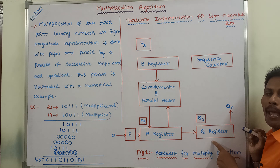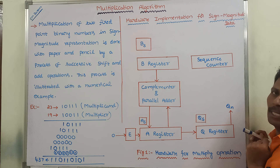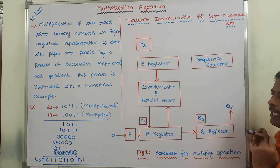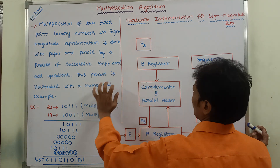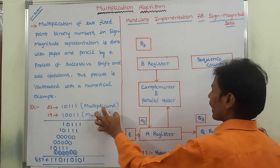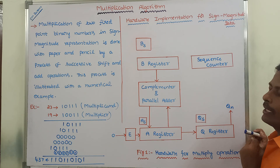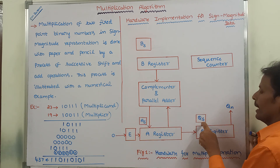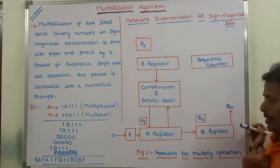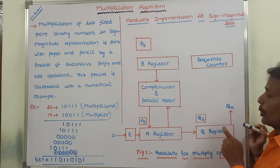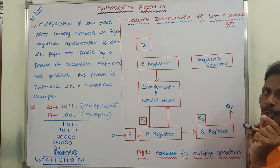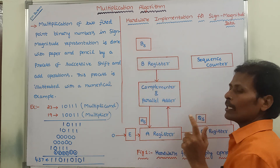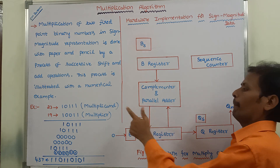The second register is called the Q register. This register is used for storing the multiplier. The sign bit of the multiplier is stored in a one-bit flip-flop called QS. So QS is used for storing the sign bit of the multiplier, and BS is used for storing the sign bit of the multiplicand.